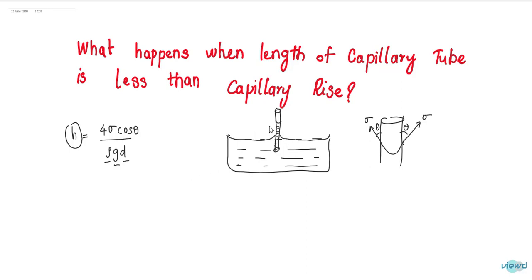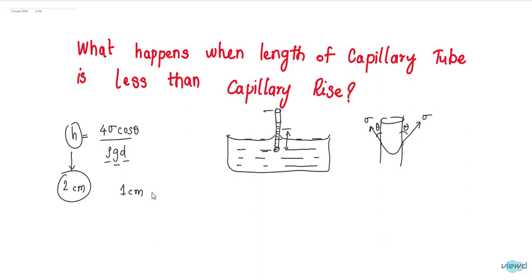What happens if the tube is not of this much length, but shorter? For example, if the capillary rise is 2 centimeters, what if the tube is only 1 centimeter in length? What happens if the tube is 1 centimeter long?